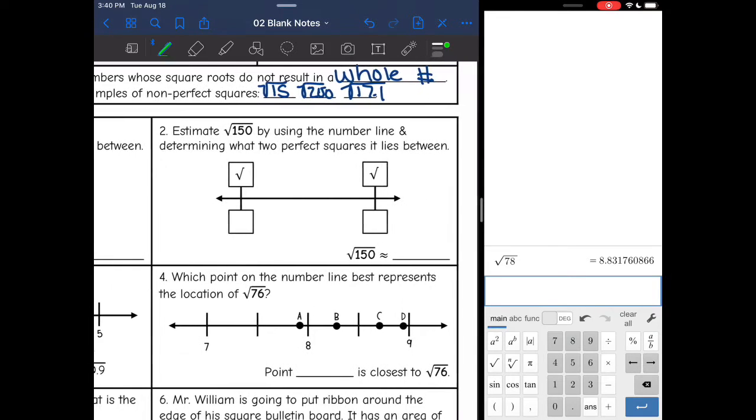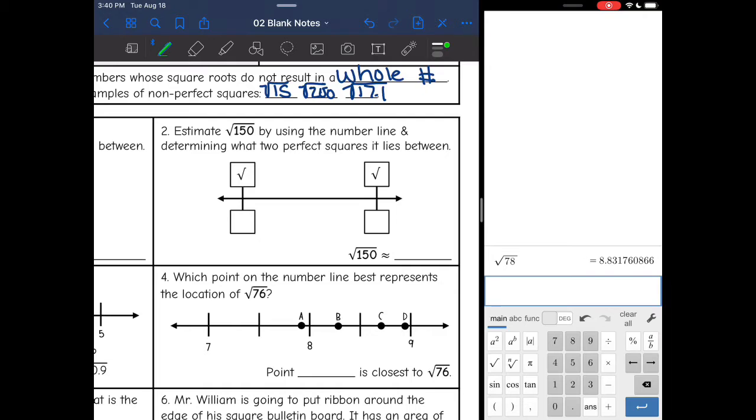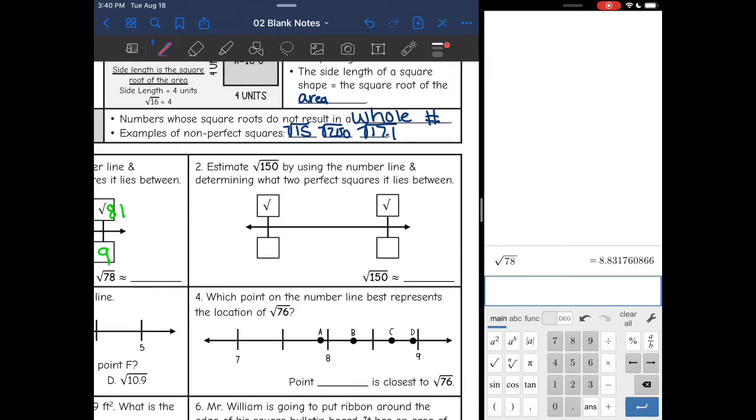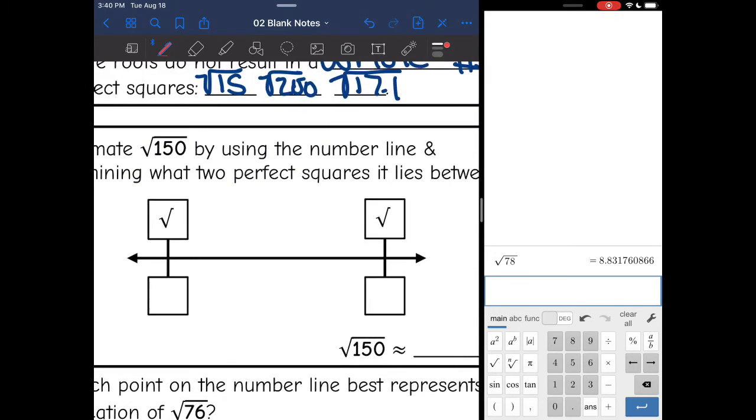Let's look at square root of 150. Let's try to use this number line to help us. So square root of 150, 150 would be between 144 and 169, which is 12 squared and 13 squared. So it's between square root of 144 and 169. Square root of 144 is 12, square root of 169 is 13.